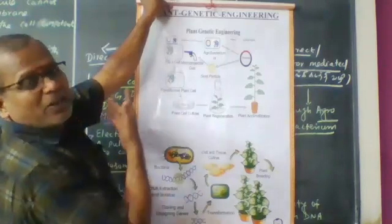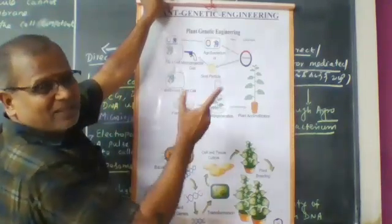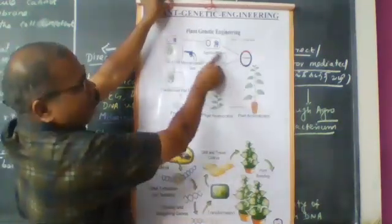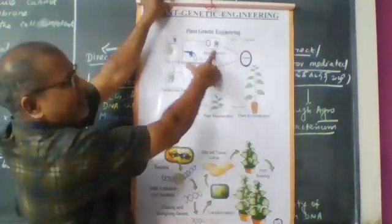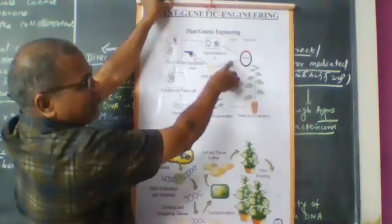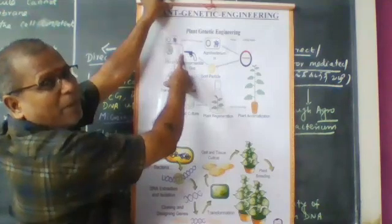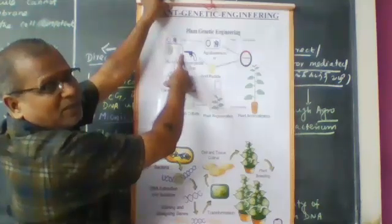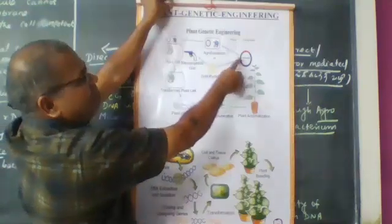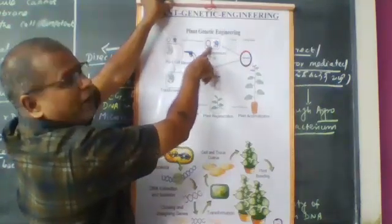If you want to use the vectorless method, you can use biolistics. Alternatively, you can use recombinant DNA with the agrobacterium method, which is an indirect or vector-mediated approach, particularly useful for plant systems.